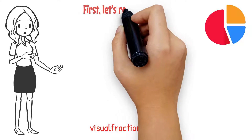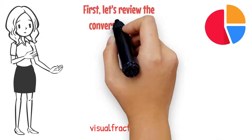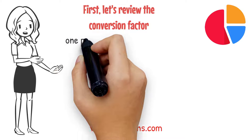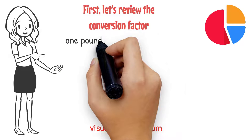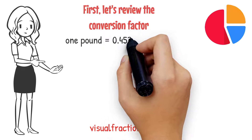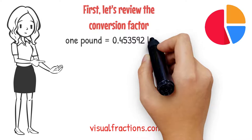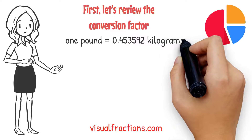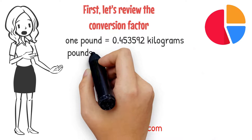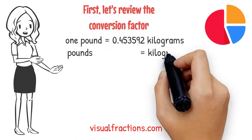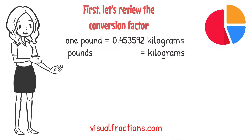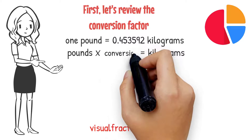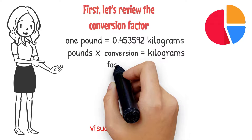First, let's review the conversion factor. 1 pound is equal to approximately 0.453592 kilograms. To convert pounds to kilograms, all you need to do is multiply the number of pounds by the conversion factor.